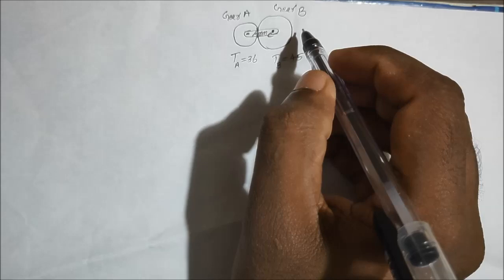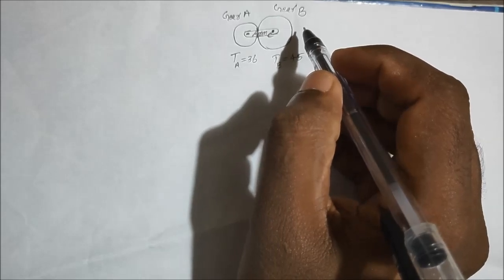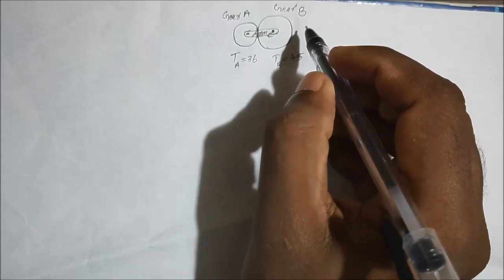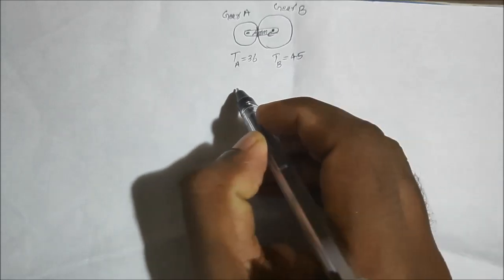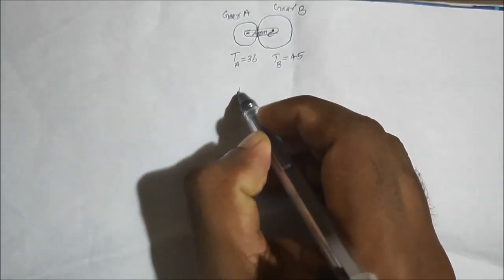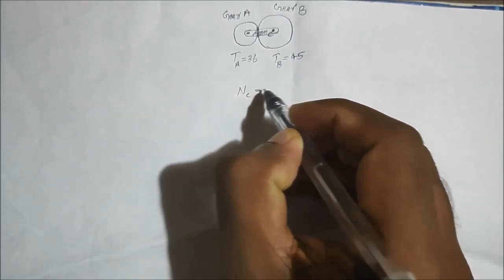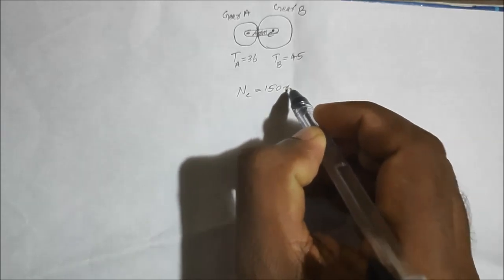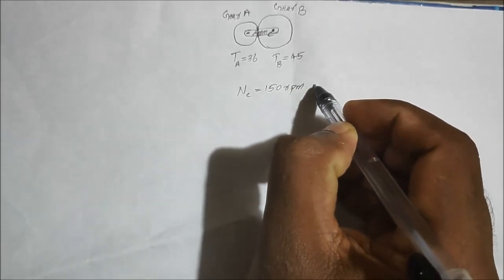The arm is rotating at 150 RPM counterclockwise. That is, N suffix C equals 150 RPM, counterclockwise direction.